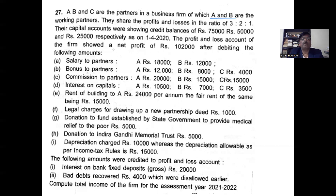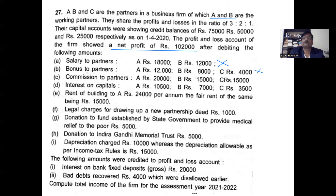Net profit as per P&L account is 1,02,000. After debiting disallowed expenses: salary to partners is disallowed — add 18,000 plus 12,000, that is 30,000. Bonus to partners is also disallowed — total bonus is 12,000 plus 8,000 plus 4,000, which is 24,000.